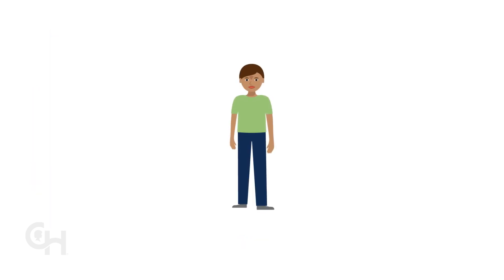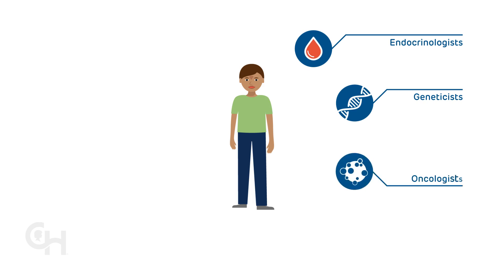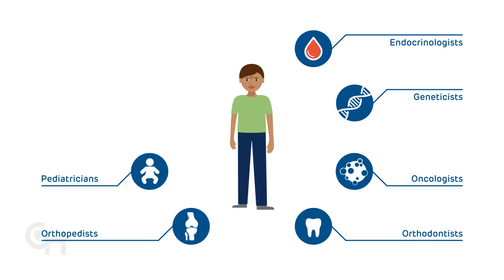Some children with BWS may need to see other medical specialists, including endocrinologists, doctors who treat children with hypoglycemia, geneticists, doctors who make the clinical diagnosis, order testing, interpret and review results, and coordinate care, oncologists, doctors who manage the prevention, diagnosis, and treatment of tumors, and review the results of tests for tumors, orthodontists, doctors who treat jaw and teeth differences, orthopedists, doctors who manage children who have a difference in the size of their legs, pediatricians, doctors who treat babies and children, plastic surgeons, doctors who treat children who have an enlarged tongue, pulmonologists, doctors who manage breathing differences.